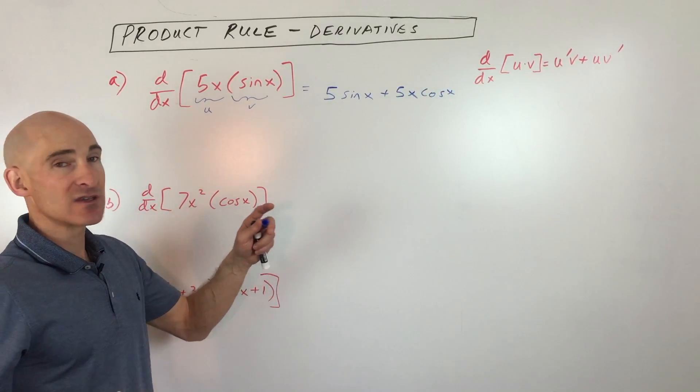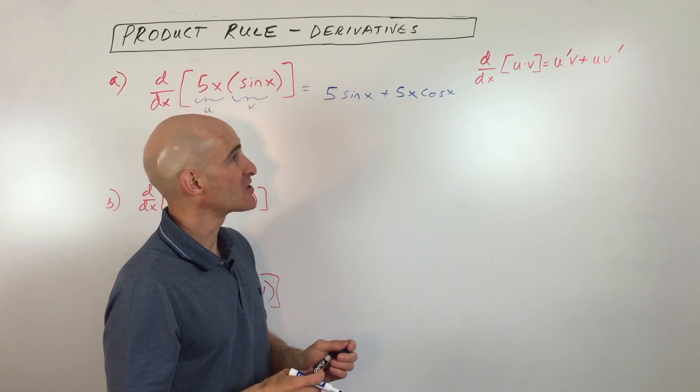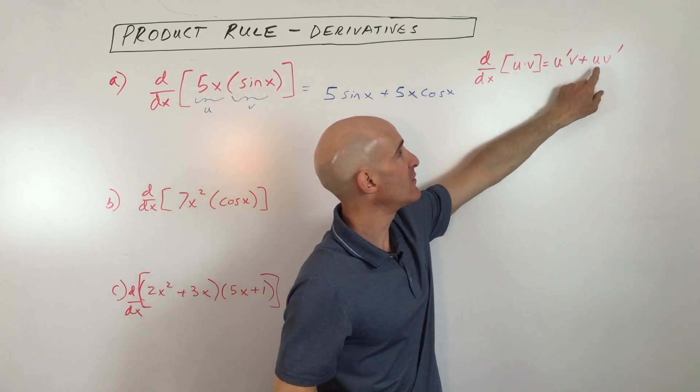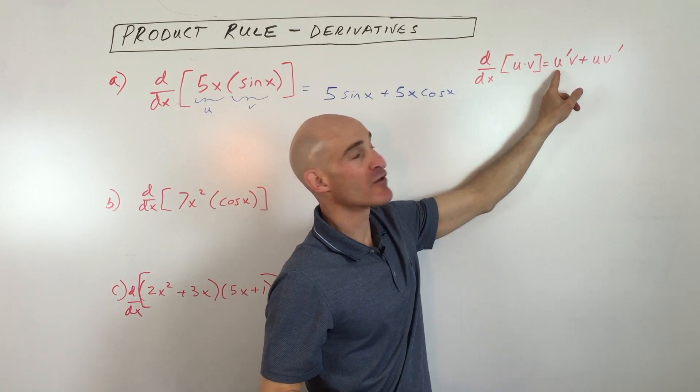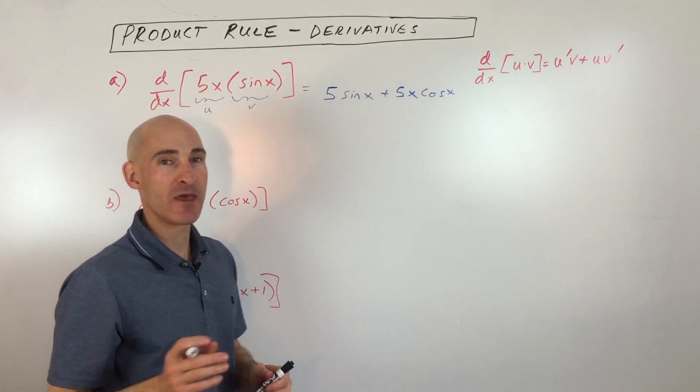Now, sometimes some books and some teachers and some students will do it in the reverse way, and that's completely fine. They'll leave the first one alone, take the derivative, and then over here, vice versa.